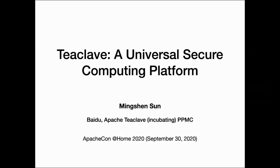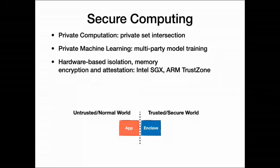Let me start with some background. Secure computing, or so-called confidential computing, is to provide a safe place — or we call it an enclave — for data computation. Normally this involves multi-parties, or sometimes single-parties, but there are several scenarios. For example, private computation like private set intersection between different parties, and private machine learning where multiple parties, like banks, want to train some model with their own private data.